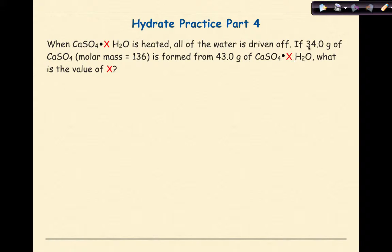There are a number of different pieces of information given here. The first is the 34 grams of CaSO4, which is our anhydrous salt. The molar mass is the mass of one mole of CaSO4. This is formed from 43 grams of our hydrated CaSO4.